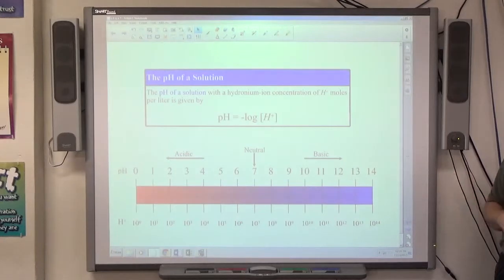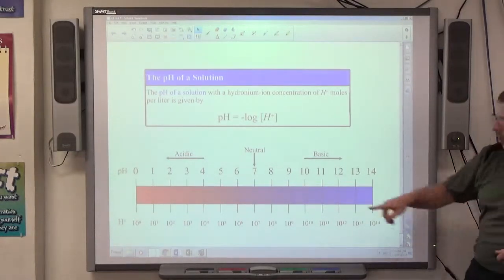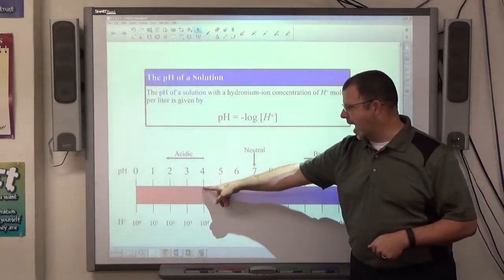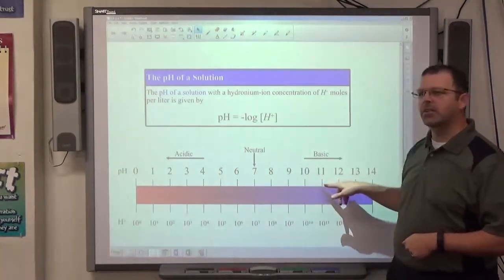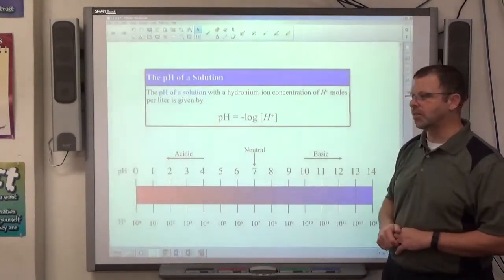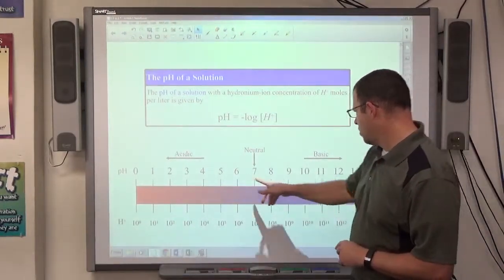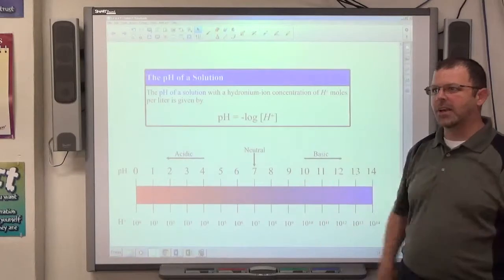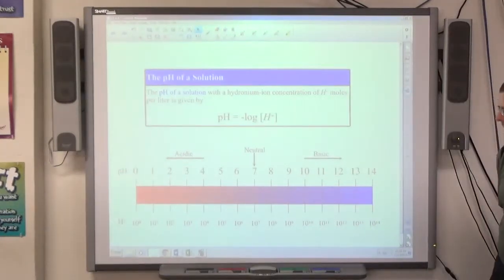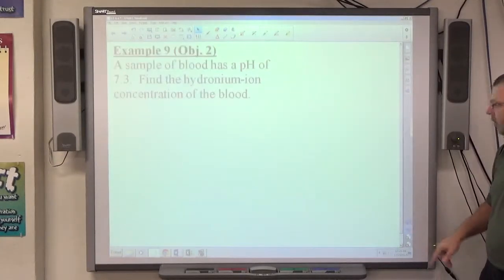Bases neutralize acids and vice versa. If you have a 4 pH acid, it would take, that's 3, so it would take an 11 pH base to neutralize it. That's not right. 10 pH bases. They should add it to 14. That neutralizes it. Anyway, and first thing we do, two things they're going to give you.